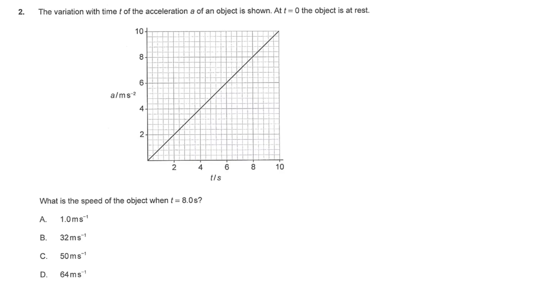IB Physics May 2025, time zone 2, SLF paper 1A, question 2. The variation with time t of the acceleration a of an object is shown. At t equals 0, the object is at rest.